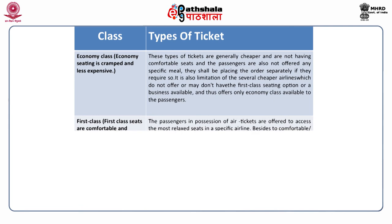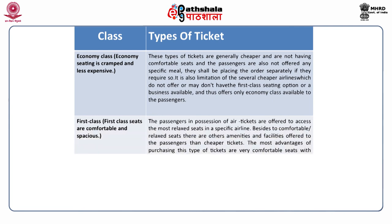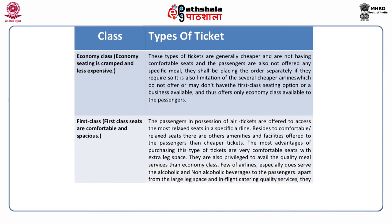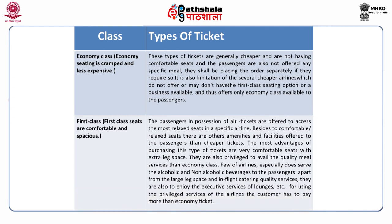The second class is First Class, where seats are comfortable and spacious. Passengers with first-class tickets are offered the most relaxed seats in the airline. Besides comfortable seats, there are other amenities and facilities offered beyond those of cheaper tickets, including comfortable seats with extra leg space. They are also privileged to avail quality meal services compared to economy class flyers. Some airlines serve alcoholic and non-alcoholic beverages. Apart from large leg space and in-flight kitchen quality services, they also enjoy executive lounge services. For these privileged services, the customer pays more than an economy ticket.